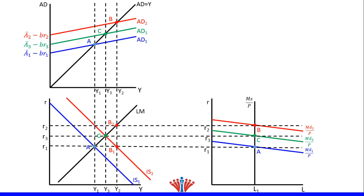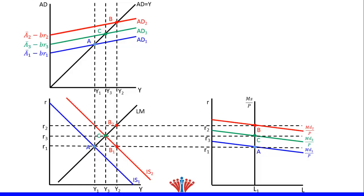Now the three markets are at equilibrium: the goods market at point C, the money market at point C, and the IS-LM model at point C. This means that once we have a shock — either positive or negative — in the goods market or the money market, the market will overreact in the primary market, and the secondary market will then correct itself over time in the opposite direction in both the primary and secondary market.